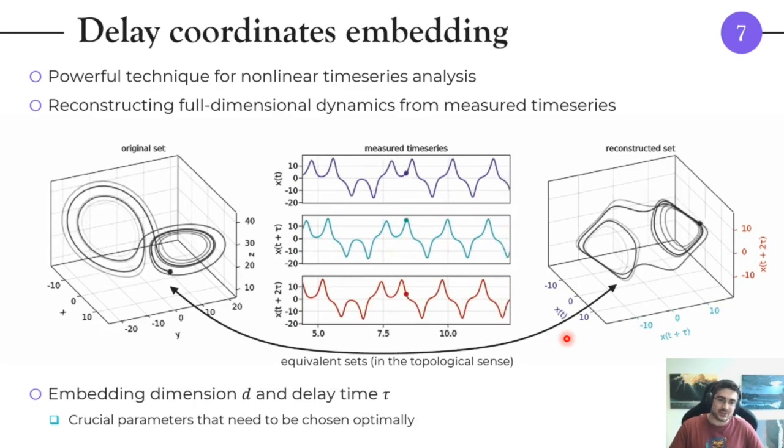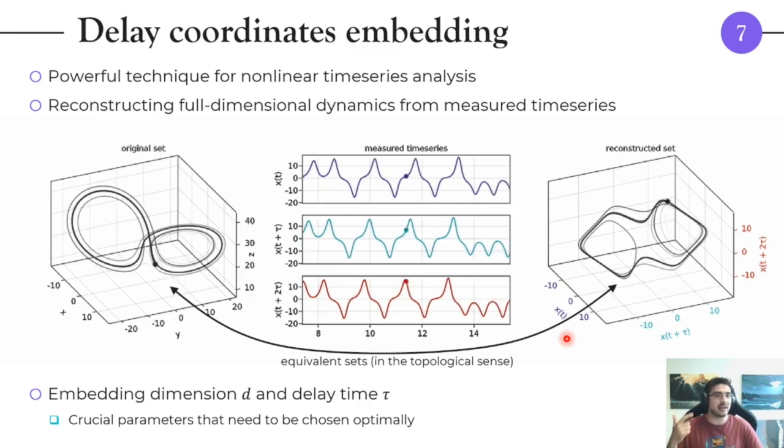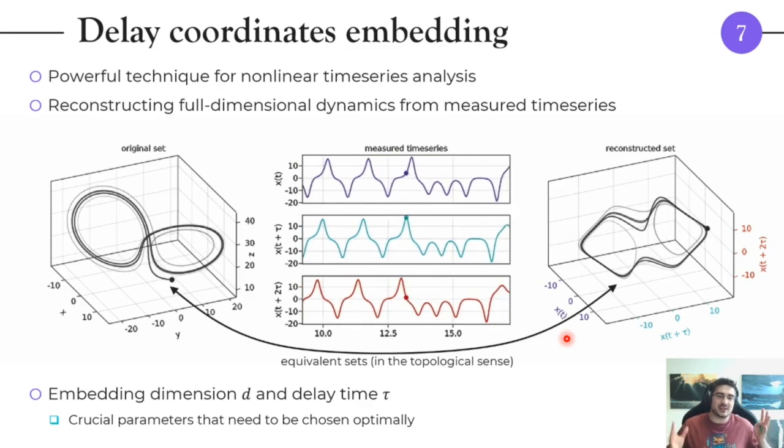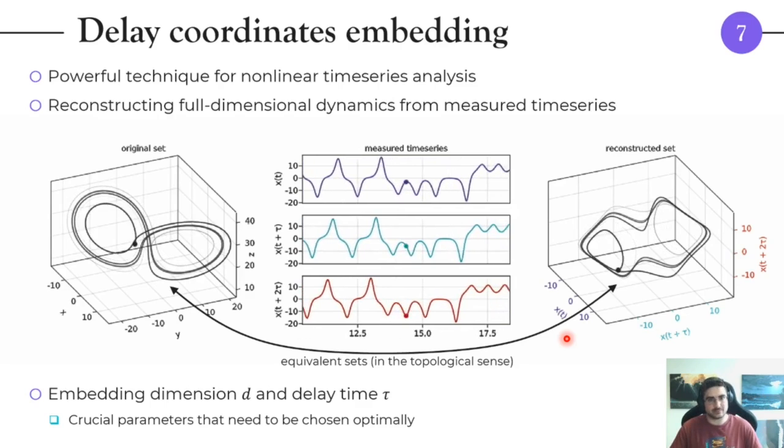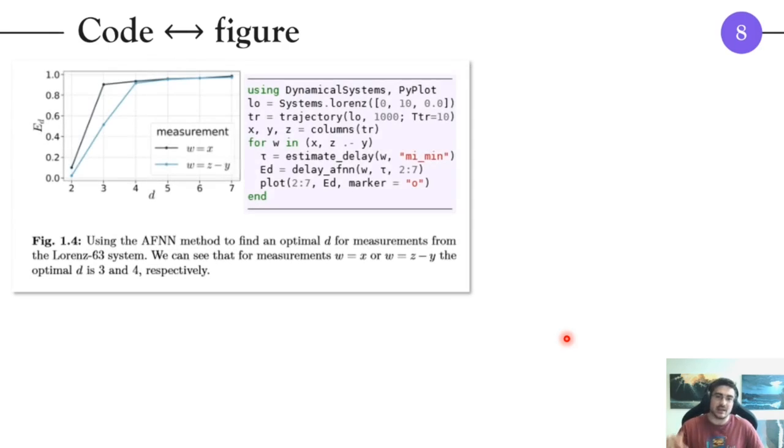However, as I mentioned, this process has two parameters: the embedding dimension d and the delay time tau, and they are crucial and they have to be chosen optimally. How does this work in the book? As I mentioned in the introduction, we first have a section that introduces the concept of delay coordinates embedding and tells you the theory about it. Then there is another section that gives you algorithms to practically compute the embedding dimension and the delay time. The last section is the code.